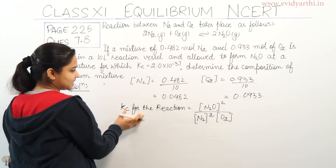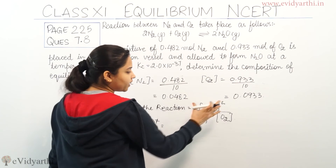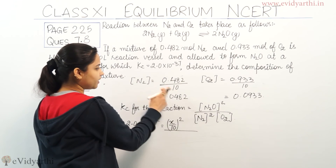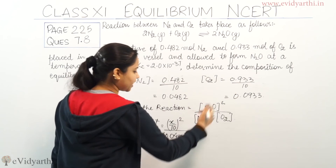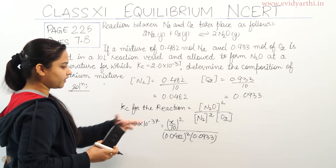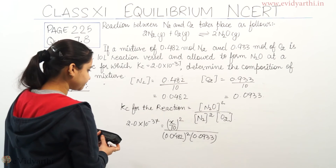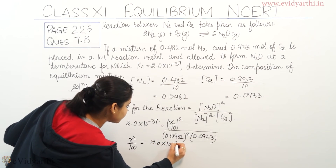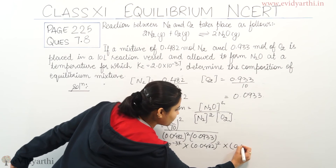We know the value of Kc. Substituting the values: 2.0 × 10⁻³⁷ = (X/10)² / ((0.0482)² × 0.0933). This gives X²/100 = 2.0 × 10⁻³⁷ × (0.0482)² × 0.0933.